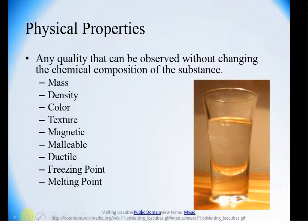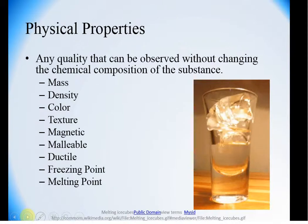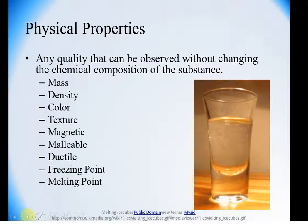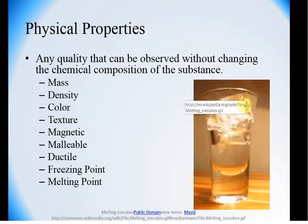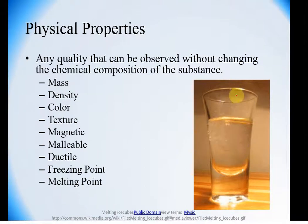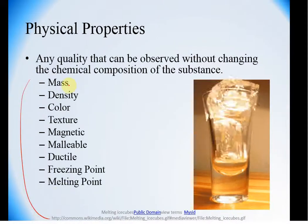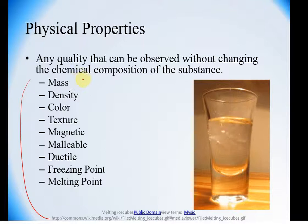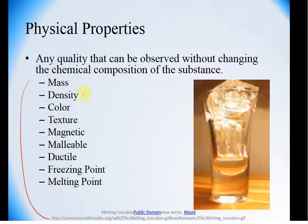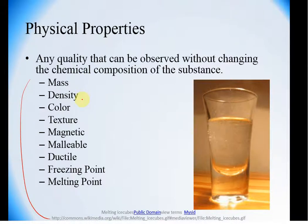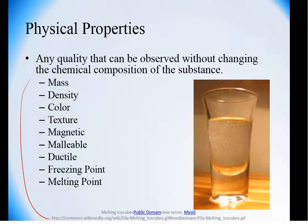Physical properties are something that can be observed without changing the identity of the substance. For example, here we have ice that's melting — it is still water whether it is solid or liquid. Other examples of physical properties include mass: you can step on a scale without changing your composition. Density: you can see if a penny is going to sink or float in water based on its density, and it's still going to be a penny regardless.